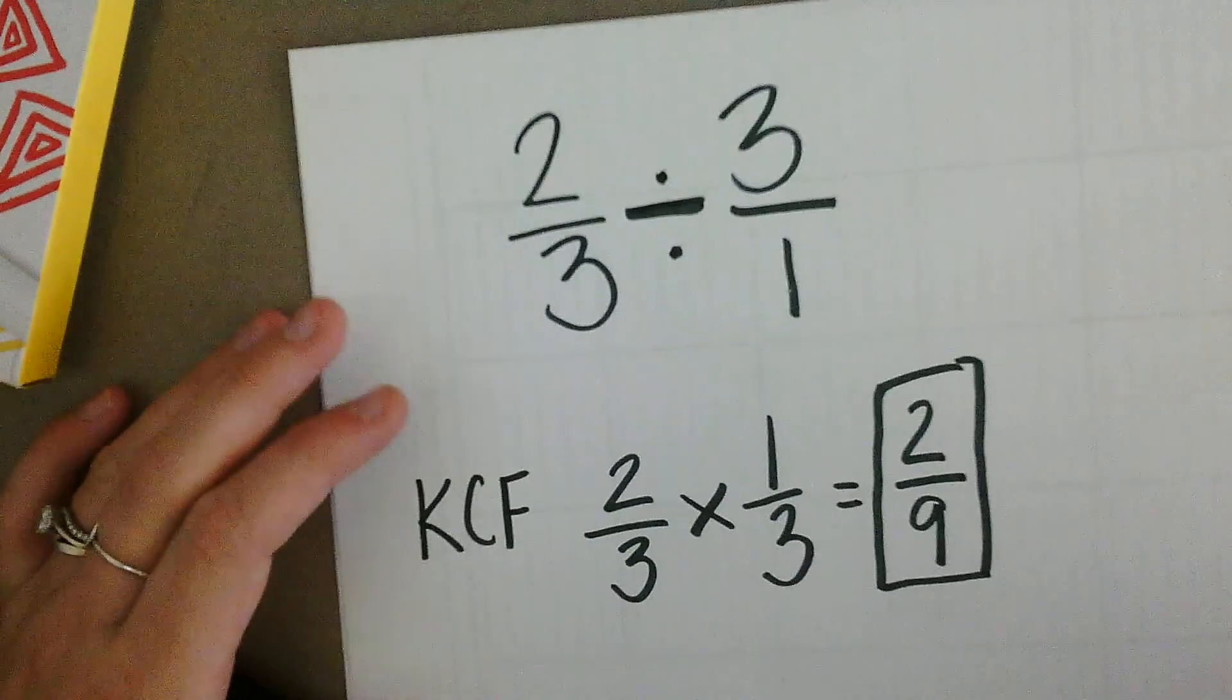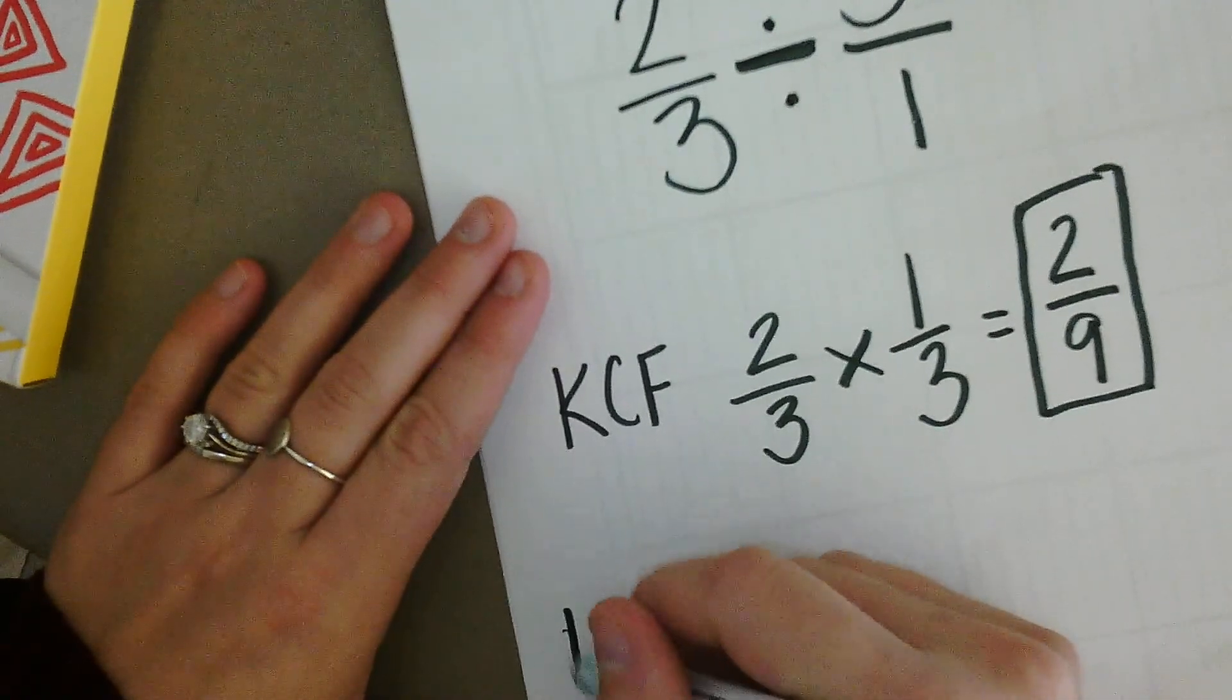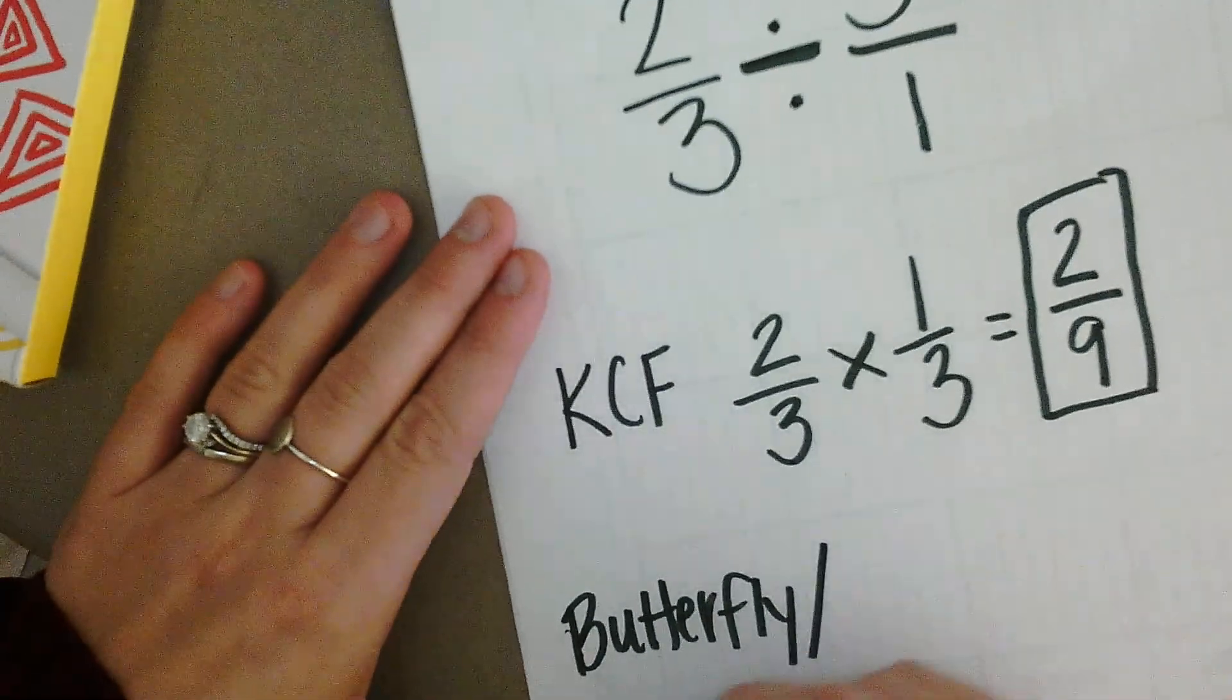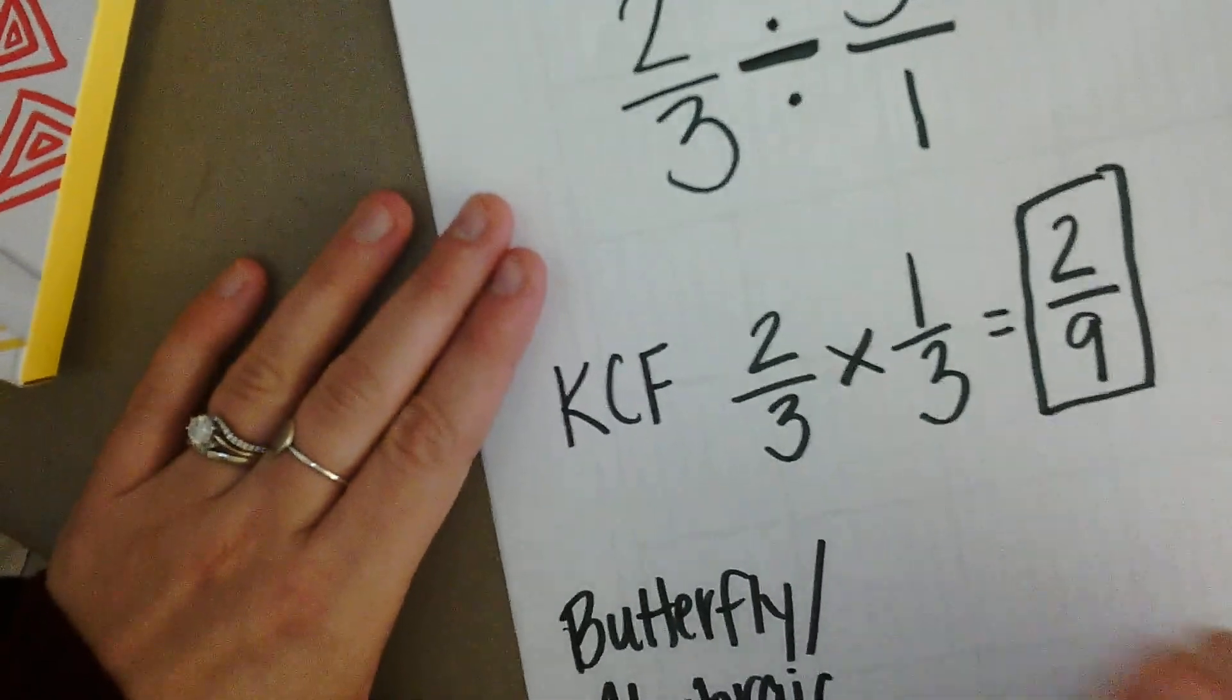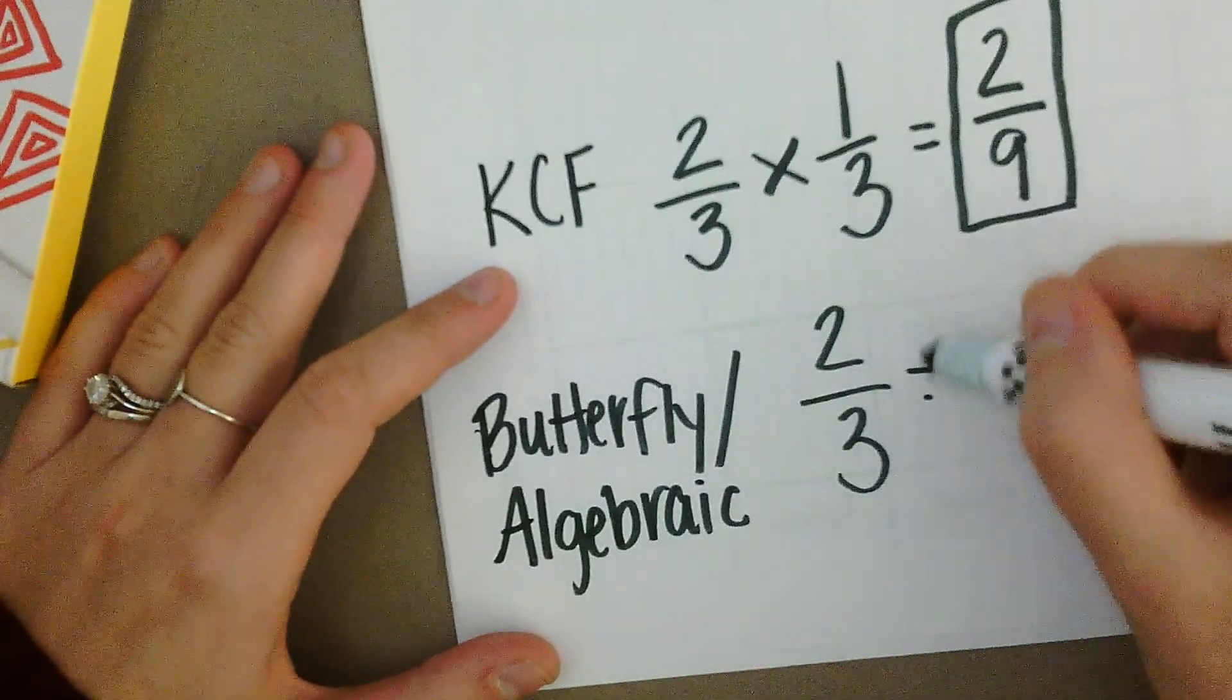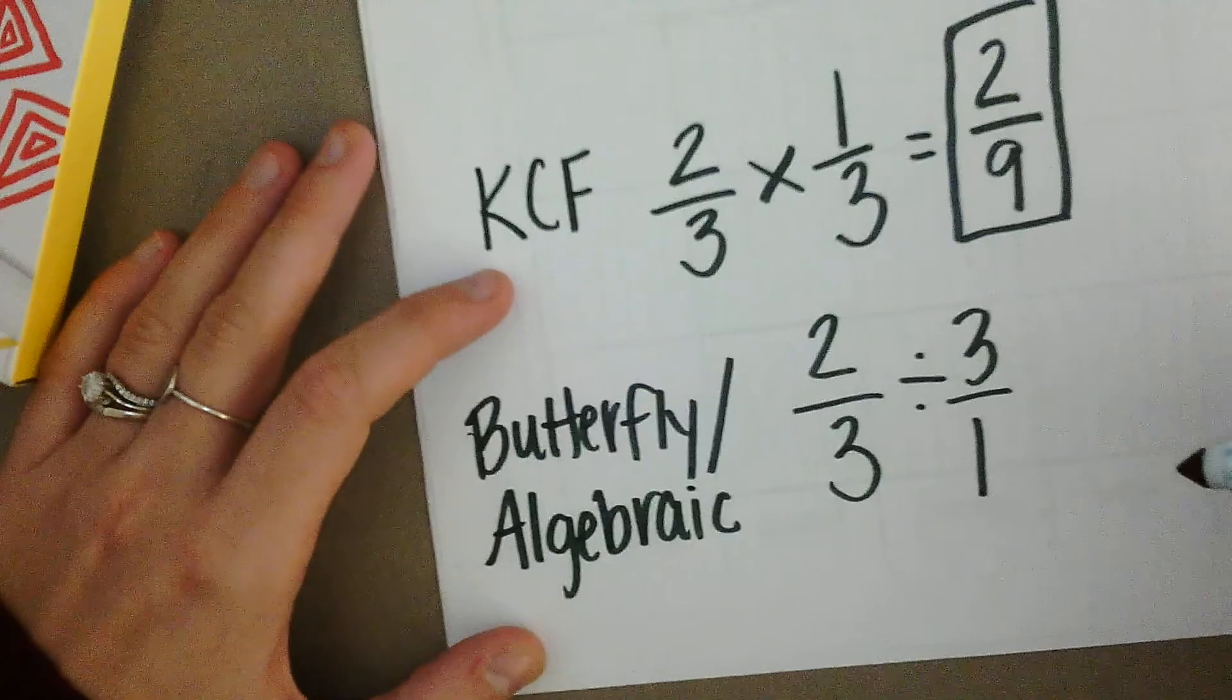The second way to complete this problem of two-thirds divided by three is to do the butterfly method or the algebraic way. You have the same fractions, two-thirds divided by three over one.